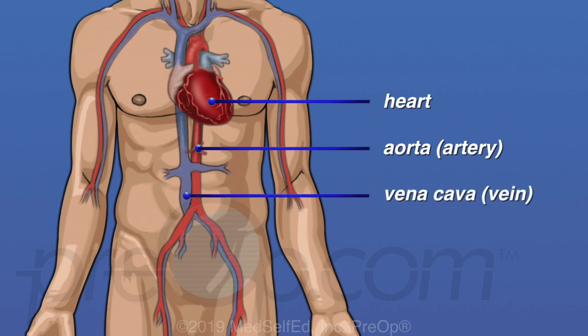Veins are a different type of blood vessel that carry blood back to the heart. The vena cava is the largest vein in the body. It carries oxygen-poor blood back to the heart.